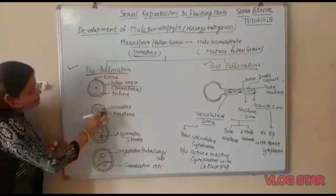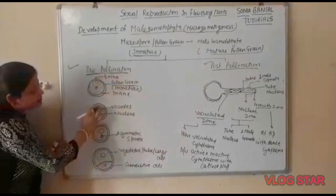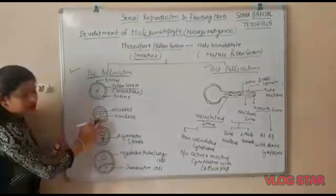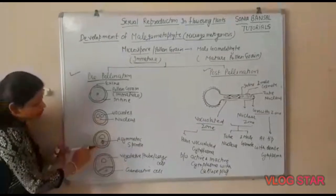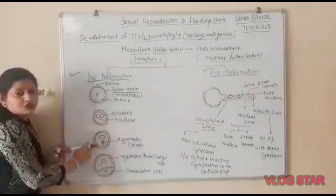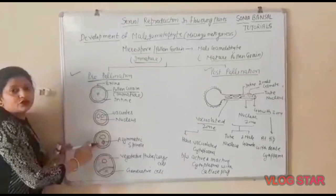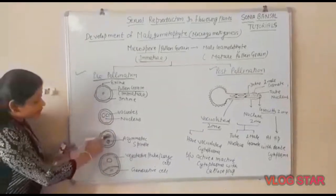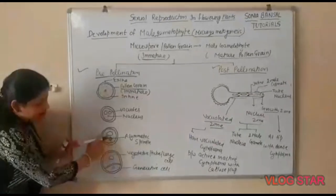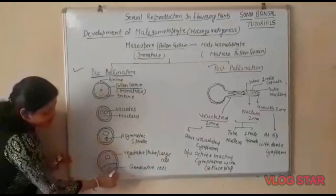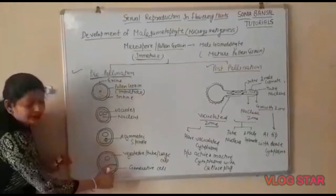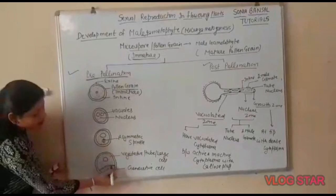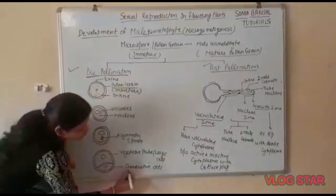First, vacuolization takes place in the cytoplasm of the pollen grain. Then the nucleus undergoes division, which is called karyokinesis. After karyokinesis, there is an unequal division of the cytoplasm.